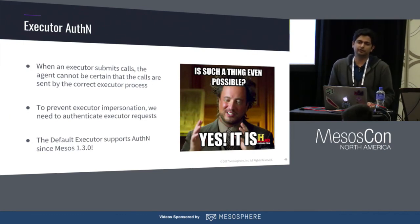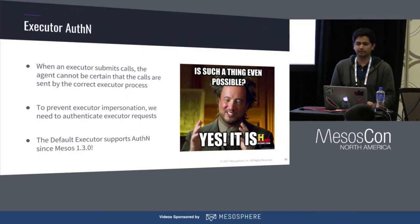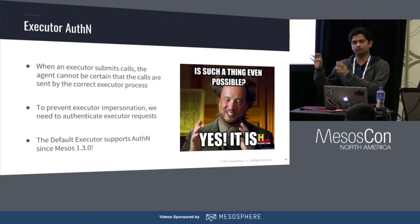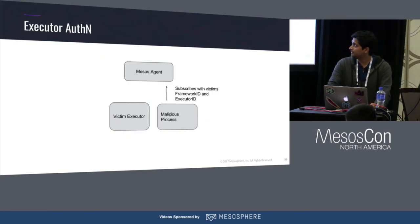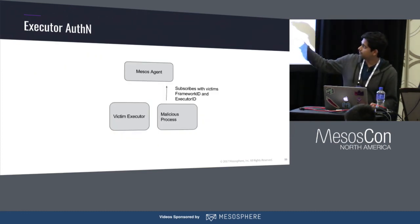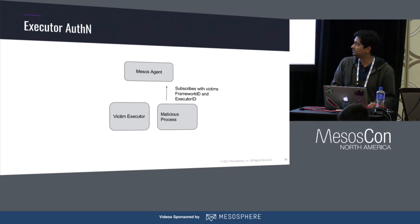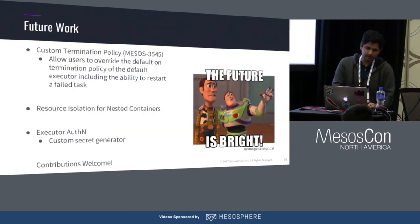The second feature is executor authentication, introduced in Mesos 1.3. It's a security feature that prevents a malicious executor process from mimicking a real executor and doing something bad on your cluster — specifically, it prevents executor impersonation. Without it, a malicious process could subscribe with the Mesos agent using the same framework ID and executor ID.